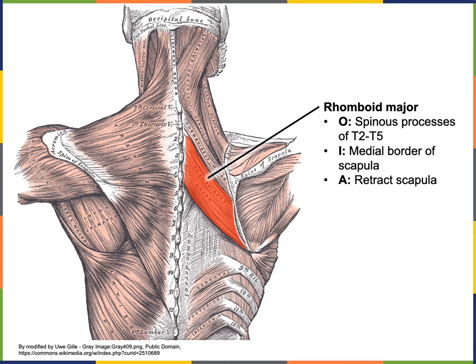Rhomboid major has its origin from the spinous processes of thoracic vertebrae, specifically T2 through T5, and its insertion is the medial border of the scapula just inferior to the root of the scapular spine. The action of the rhomboid major is to retract the scapula.